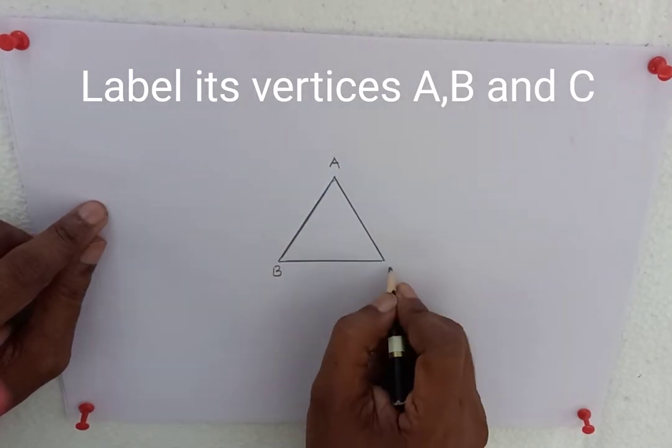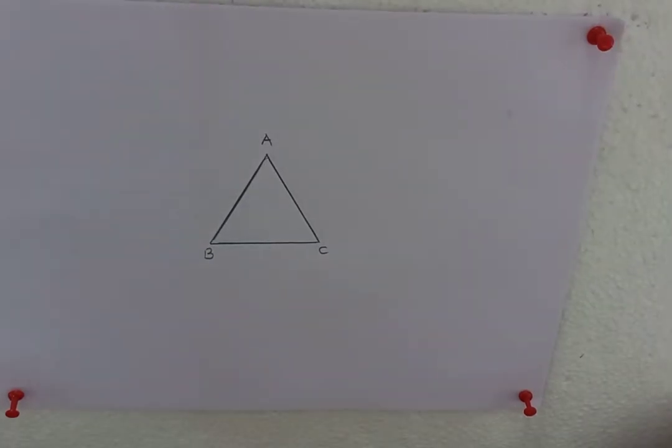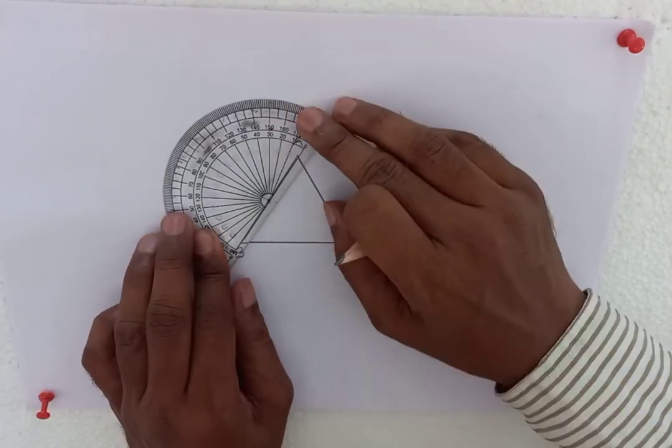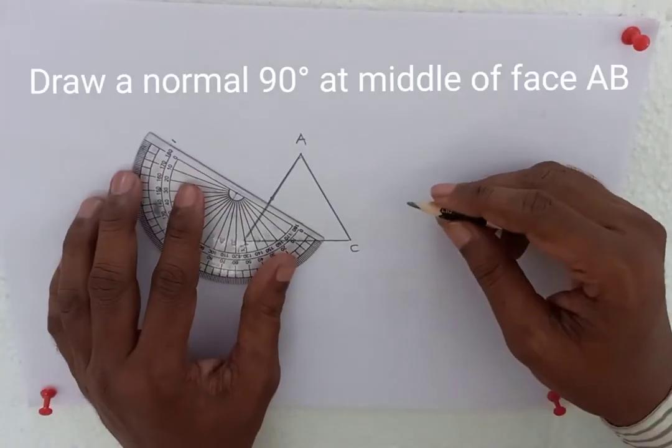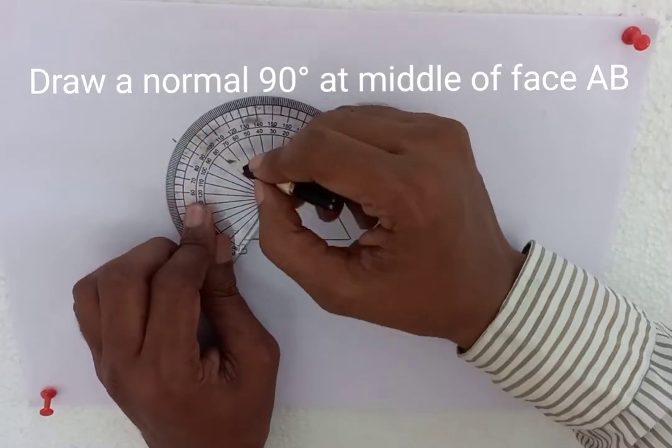Label its vertices A, B and C. Take a point at the middle of the face AB. Draw a normal 90 degrees at the middle on the surface AB.